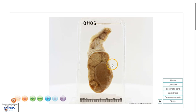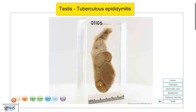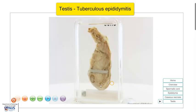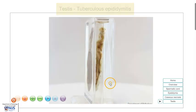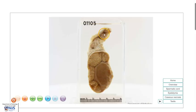Hello. This is a virtual pathology specimen of a case of tuberculosis epididymitis. We are looking at the cut section of a testis. Just to orientate ourselves, this is the testis, the epididymis, and the spermatic cord.